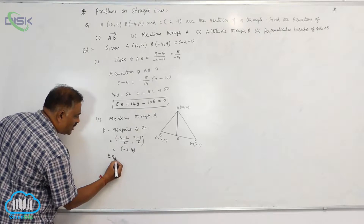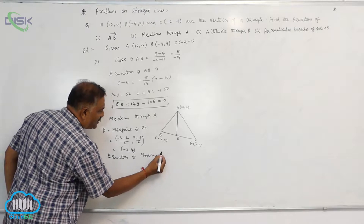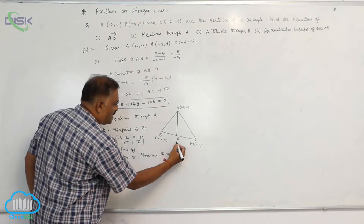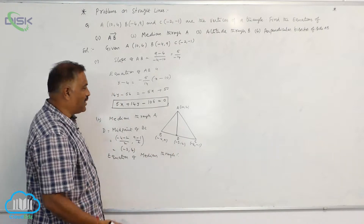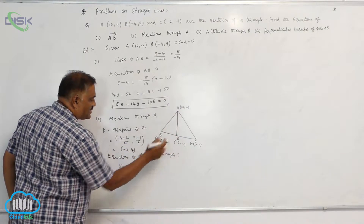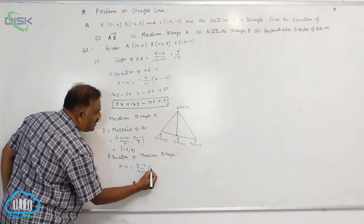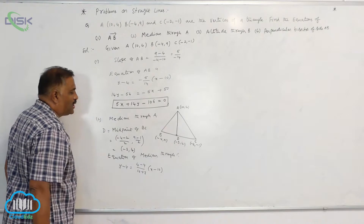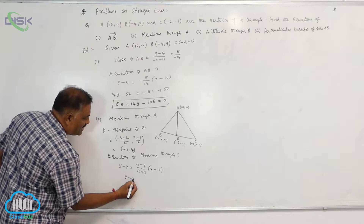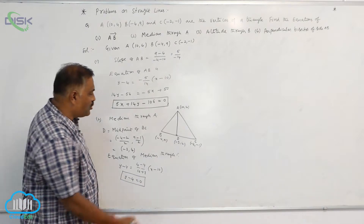Now we write the equation of the median through A. We have two points: A(10, 4) and D(-3, 4). Using point-slope form: y - 4 = (4 - 4)/(10 - (-3)) × (x - 10). Since 4 - 4 = 0, the slope is 0, so y - 4 = 0. Therefore, the equation of the median through A is y = 4.